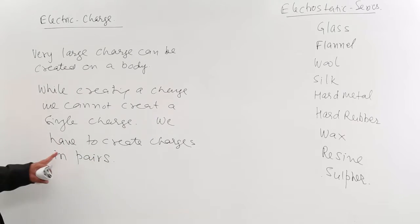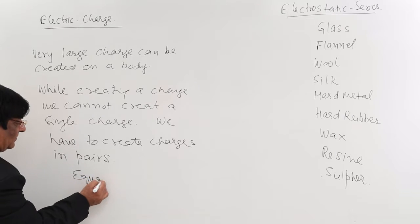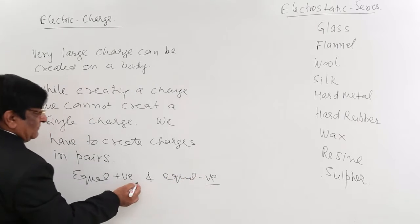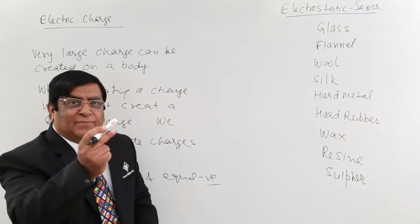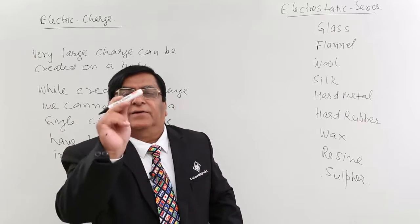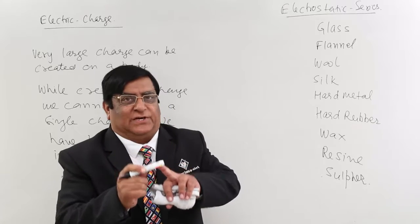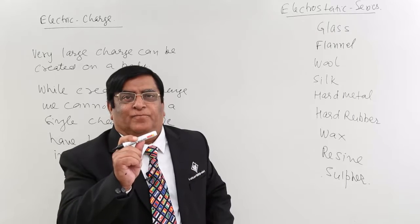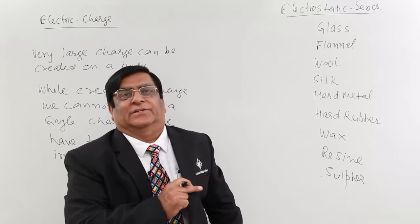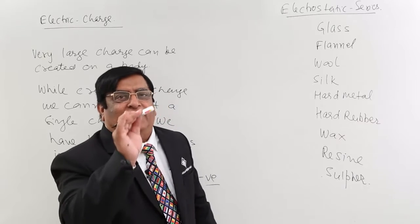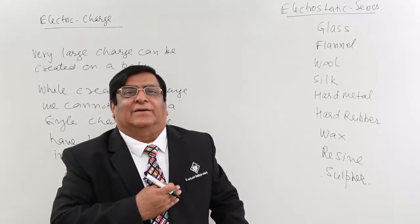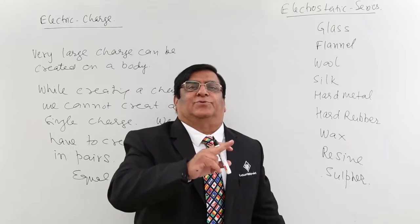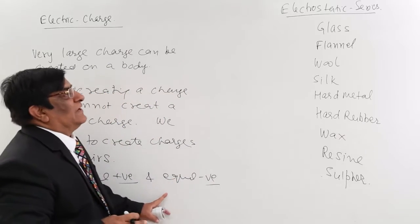We have to create charges in pairs, equal positive and negative. If I am rubbing it with my coat and creating charges here, if these are positive charges and its quantity is 1000, then definitely 1000 negative charges are created on this cloth. It cannot happen that I will create here 1000 and here it is no charge or it is 500 charge. It has to be opposite and equal in numbers.